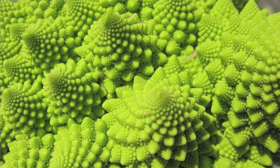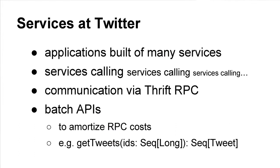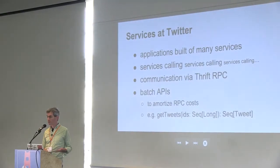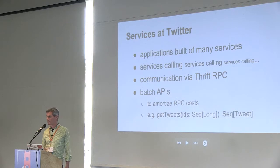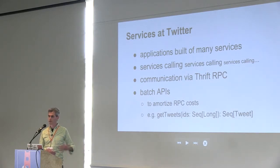This is a schematic overview of the service-oriented architecture that we have at Twitter. There are just tons and tons of services, and services calling services, and little knobs and things hanging off everywhere — at least that's what it feels like. A typical application at Twitter is built of many services. The stack is both deep and wide, and we have services calling services all the way down. We use Thrift RPC for communication among all these things. And it's very typical to have batch APIs in these services, just to amortize the cost of traversing the RPC stack. A pretty typical API would be: get me the tweets for this sequence of IDs and return a sequence of tweets.